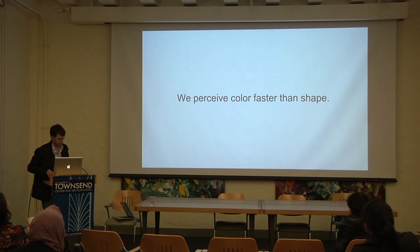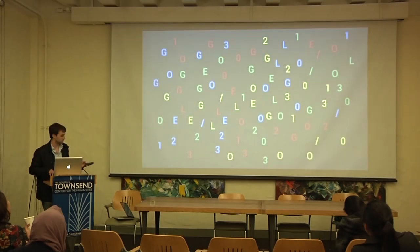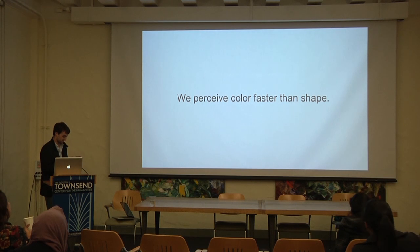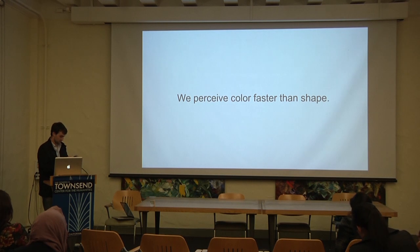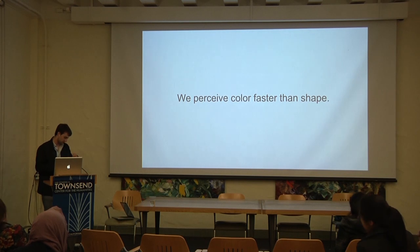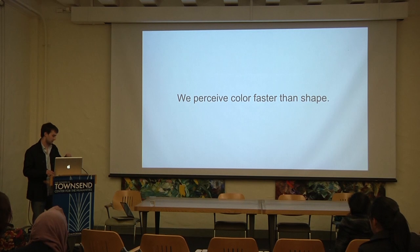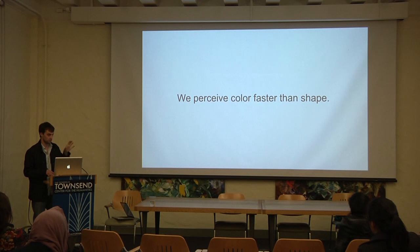We perceive color faster than shape. I'm going to do a quick experiment: I'll show you a series of letters and numbers of different colors, and I want you to tell me how many of them are red. It doesn't matter what the letter or number is, just how many are red — shout out the number.